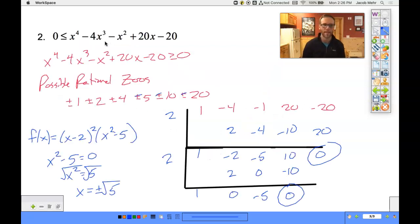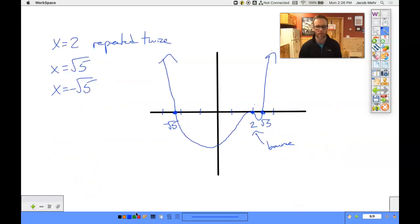So where is this greater than or equal to 0? Let me color it red. It's greater than or equal to 0 on this whole stretch, including negative root of 5. It's equal to 0 at 2. And then it's equal to 0 at the square root of 5 and continued on.